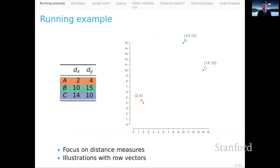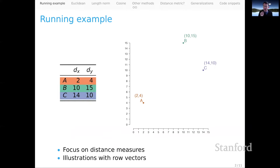To make this discussion intuitive, I'm going to ground things in a running example. On the left, I have a very small vector space model. We have three words, A, B, and C. You can imagine that we've measured two dimensions, dx and dy — you could think of them as documents. There are two perspectives you might take on this vector space model.